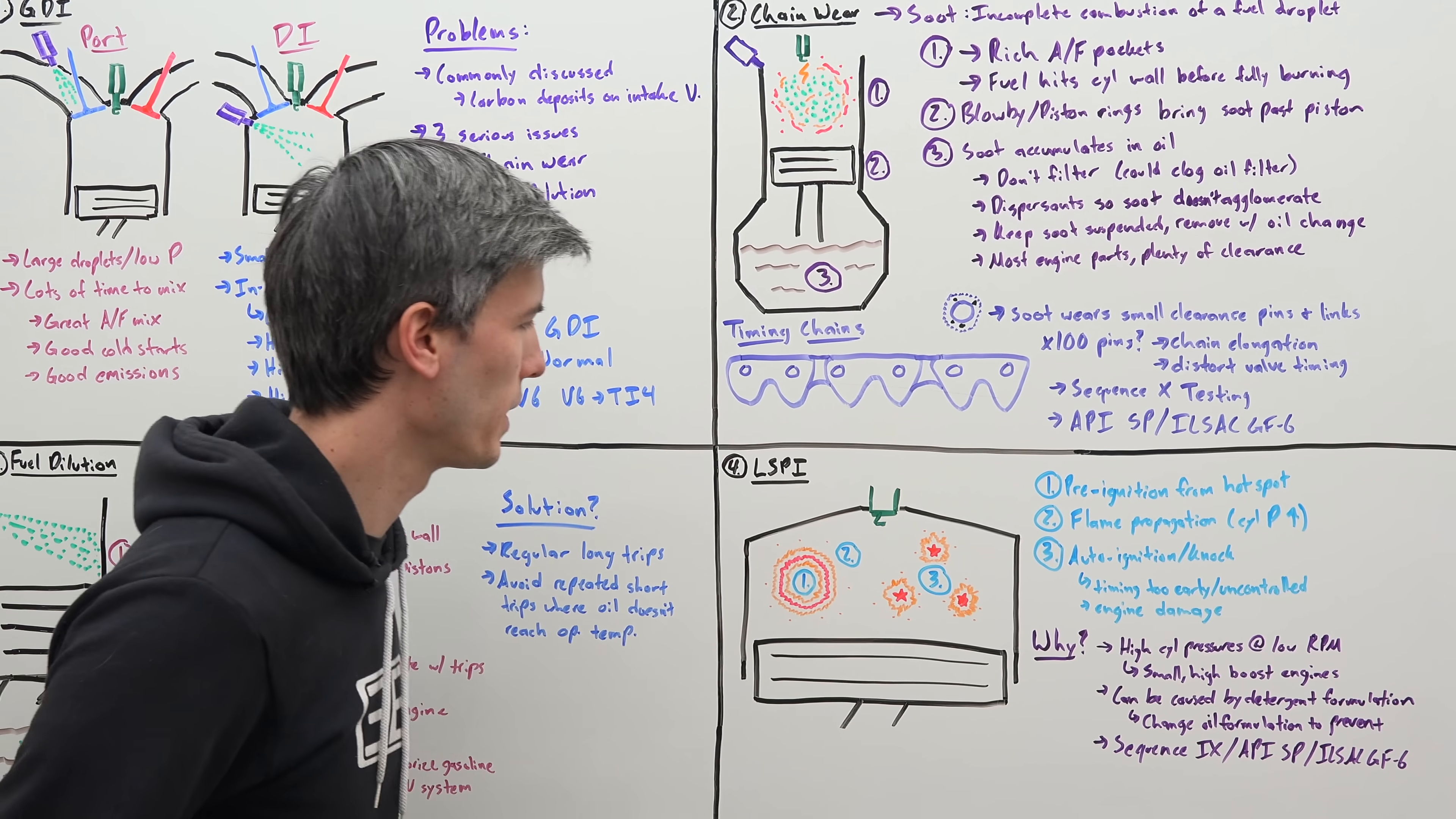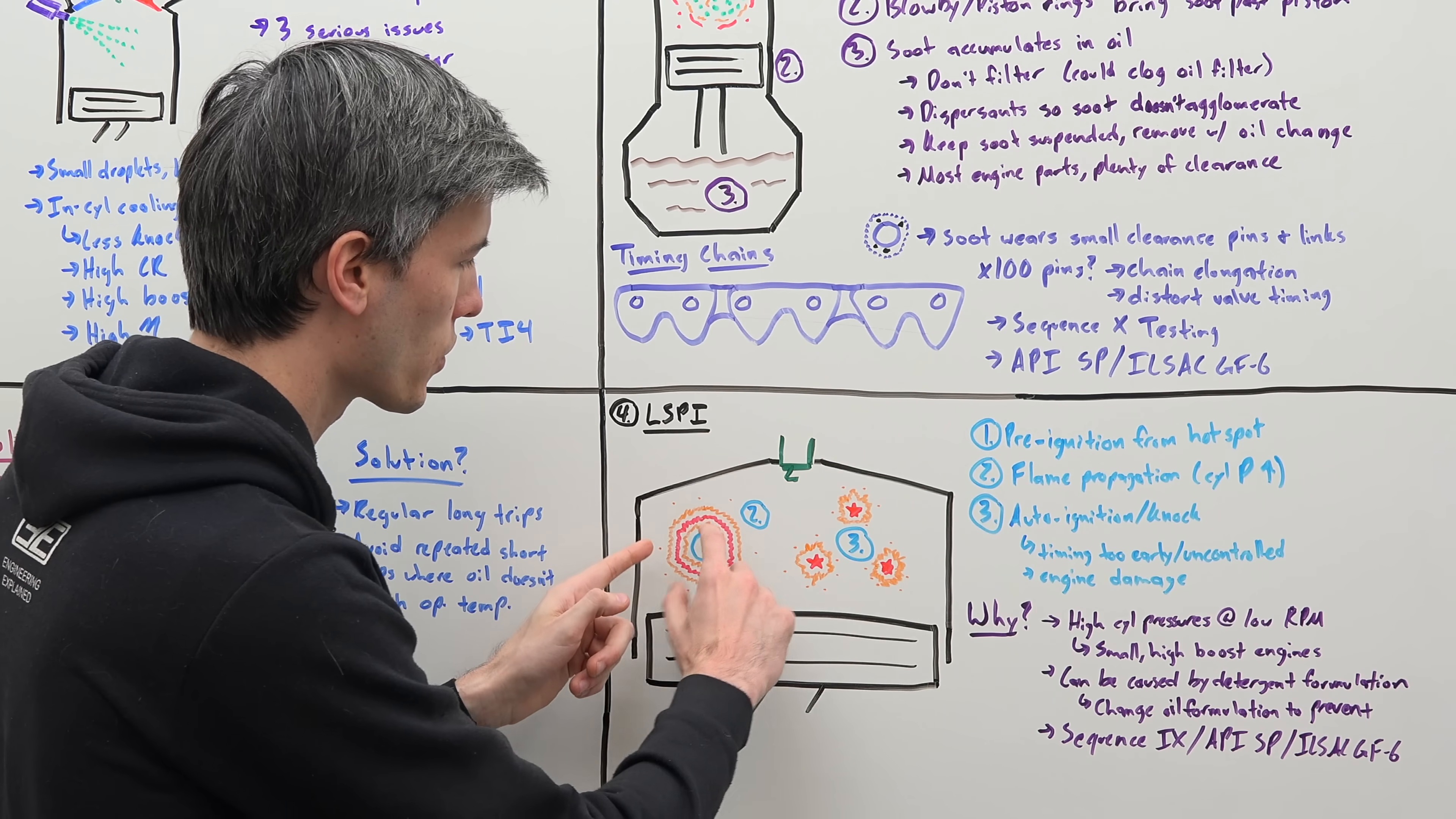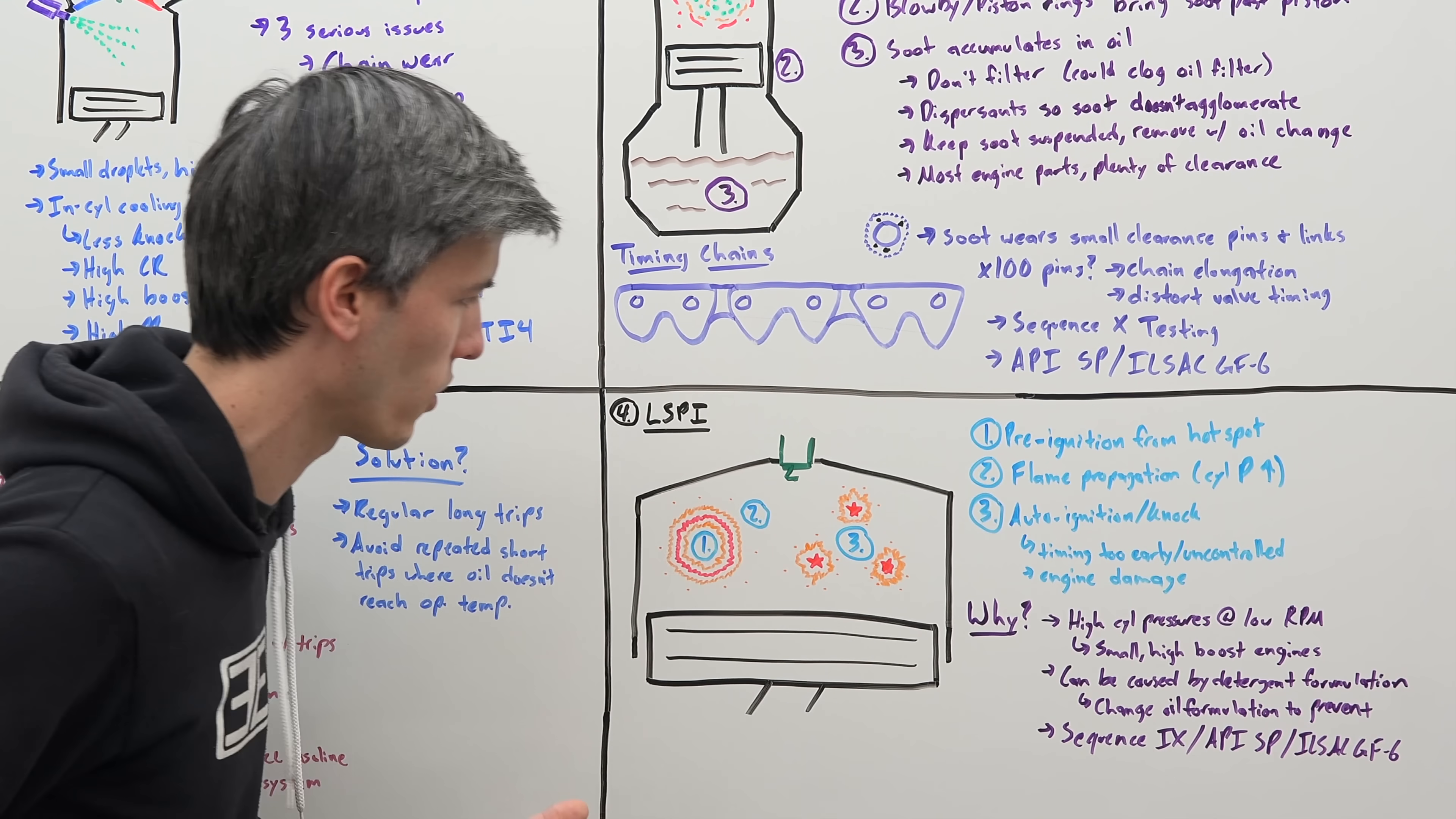Finally, we get to low speed pre-ignition. So what is this? Well, during our compression stroke, we're compressing our air and fuel, and before our spark plug fires, we have pre-ignition occur from a hot spot somewhere within that cylinder. That hot spot causes the air and fuel to start burning before our spark plug has actually fired. Then that flame front starts to propagate out from whatever hot spot ignited it, and this starts to increase the surrounding pressure of the entire cylinder. As you increase that cylinder pressure, and we're compressing that air and fuel down, so we're getting really high pressures within our cylinder, and then we have auto-ignition or knock occur in other pockets where that air and fuel just starts to combust. So your timing is happening too early and you're not controlling when your ignition timing occurs. This can cause severe engine damage.